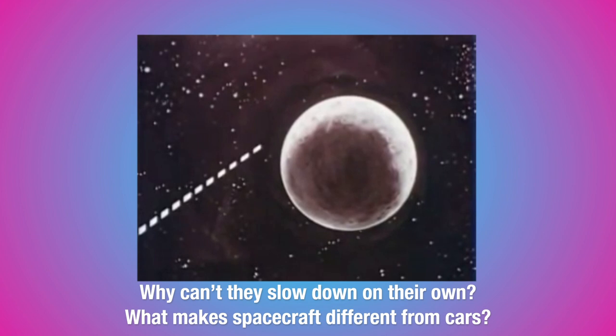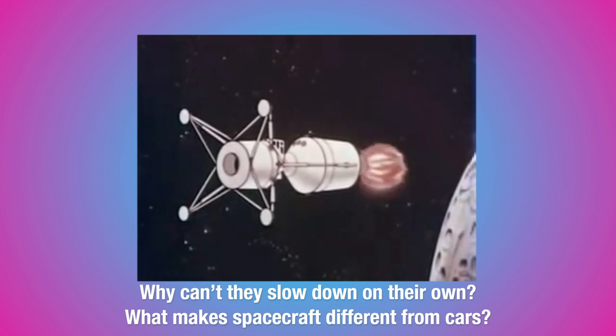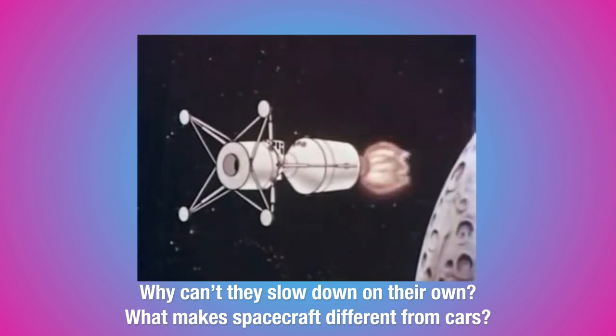But why is that? Why can't a spacecraft just slow down on its own, the way cars do as they're coasting along? After all, if we turn off their engines and let them coast along, cars will also slow down and then eventually stop, right?